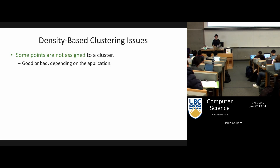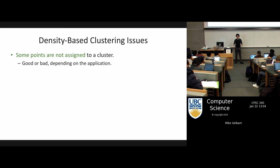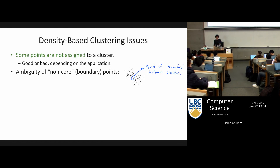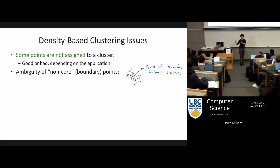What are the implications of all this? One is that some points are not assigned to a cluster. If you're in a very non-dense region you might not be a core point yourself or close to any other core point — this could be good or bad depending on what you're trying to accomplish. With k-means every point is always assigned to a cluster by looking at the closest mean. There's also a slight ambiguity in that a boundary point between two clusters will be claimed by whichever cluster tries to grab it first.